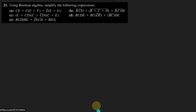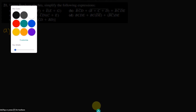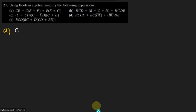Hello guys, this is question 21 and here we have to use Boolean algebra to simplify the following expressions. The part A of our question is given here and that is CE plus CE plus F plus E complement, E plus C. So let us start solving it.